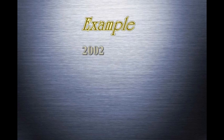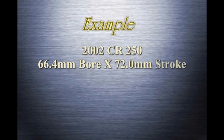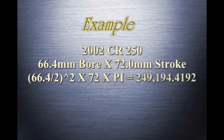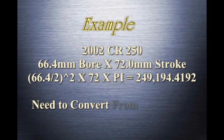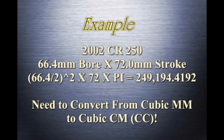Let's go through an example. A 2002 CR 250 has a 66.4 millimeter bore and a 72 millimeter stroke. 66.4 divided by 2, squared, multiplied by 72, multiplied by pi gives us 249,194 cubic millimeters. However, we need to convert from cubic millimeters to cubic centimeters to get cc's.